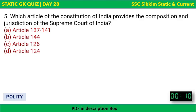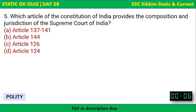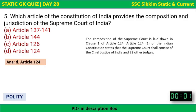Which article of the Constitution of India provides the composition and jurisdiction of the Supreme Court? Options: Article 137 to 141, Article 144, Article 126, or Article 124. The correct answer is Article 124. The composition of the Supreme Court is laid down in Clause 1 of Article 124, which states the Supreme Court shall consist of the Chief Justice of India and 33 other judges.